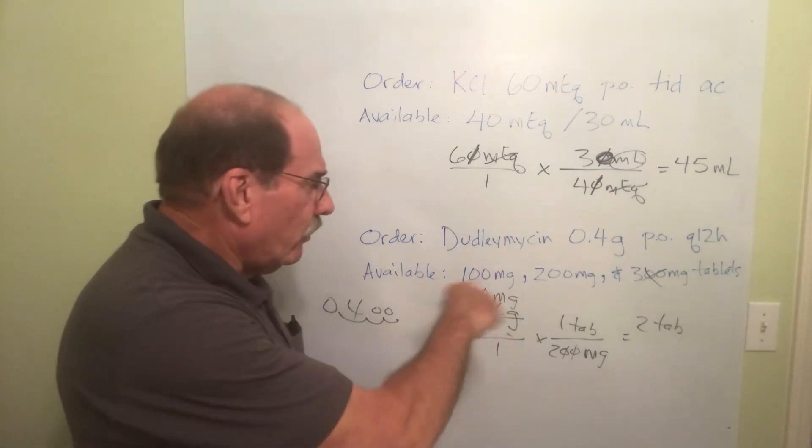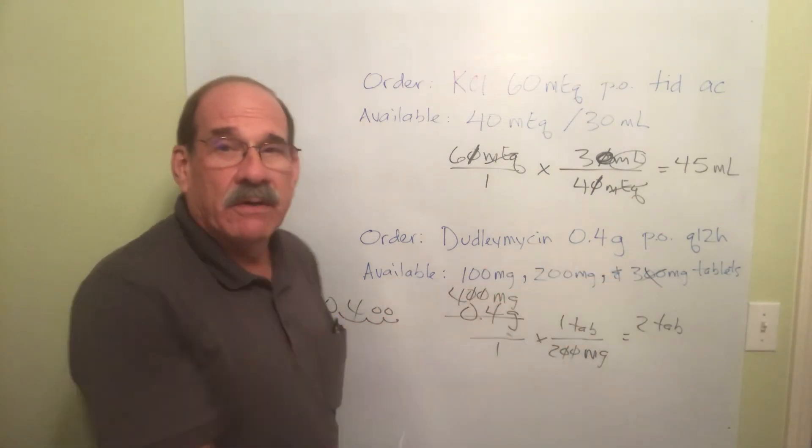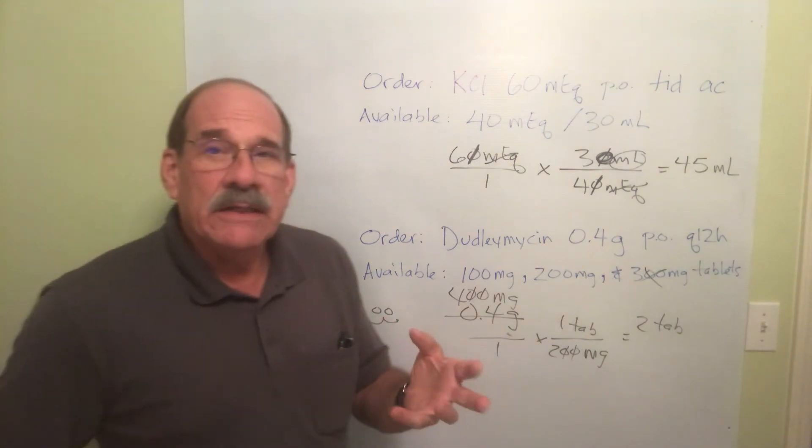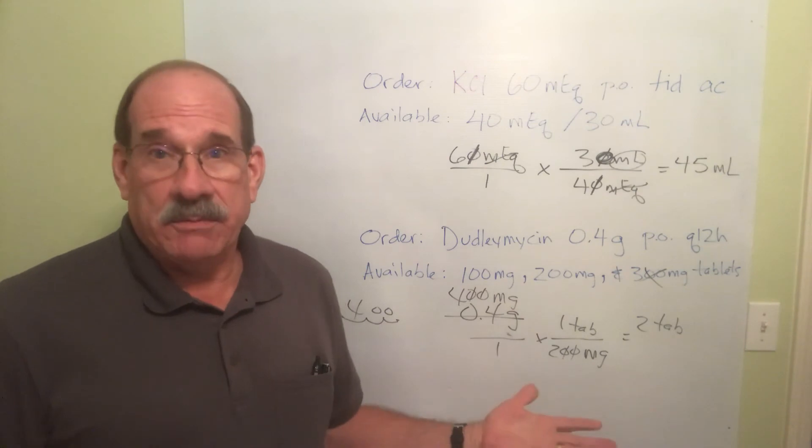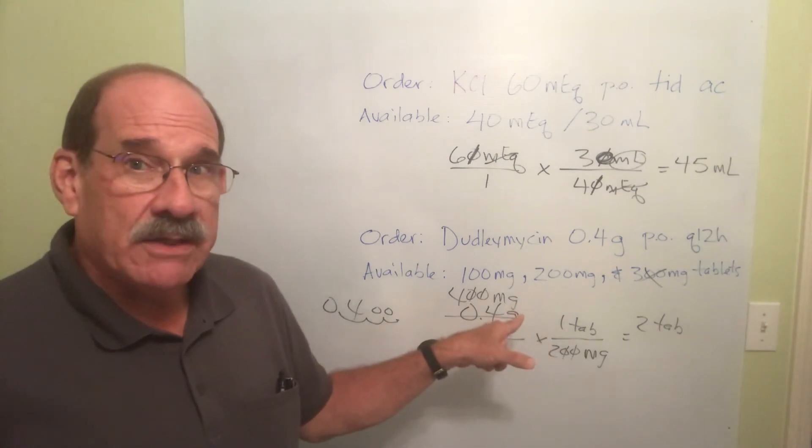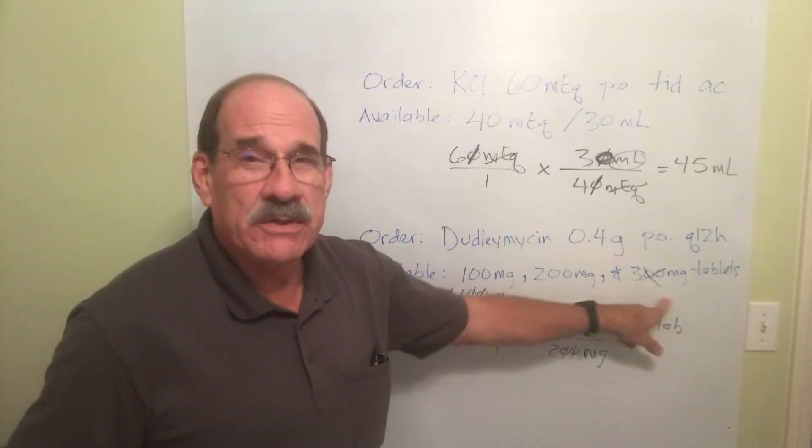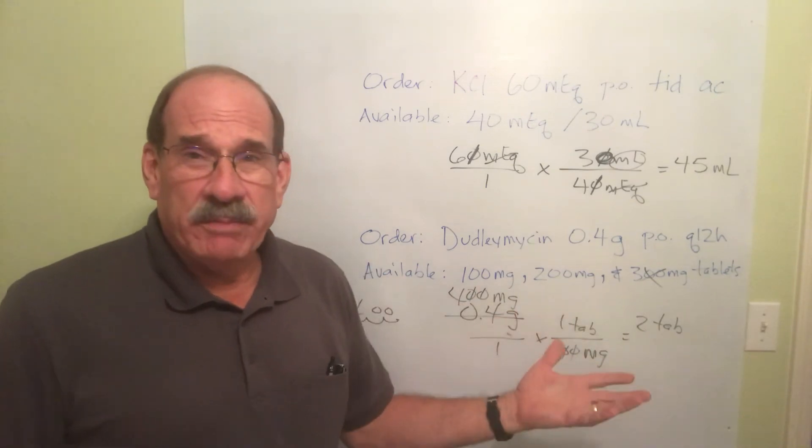So anytime you have more than one option, whether two or three different options, try to give the least, the fewest amount of the tablets or pills or capsules that you can to get the job done. I hope that made sense. Again, why is that not a good option? Because to get one and a third pills, you can't.